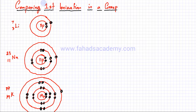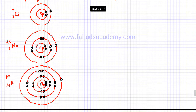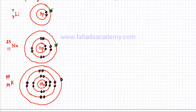We are looking at and comparing the first ionization energy, which means we are trying to remove the first electron. So I'm going to try and remove one electron from each of these atoms — this electron from lithium, this electron from sodium, and for potassium I will try and remove this electron. I'm going to try and remove the outermost electron in all three atoms.